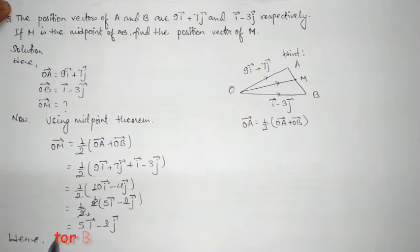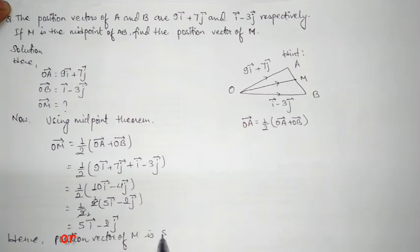Hence, the position vector of M is 5i minus 2j.